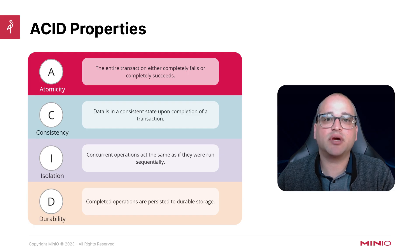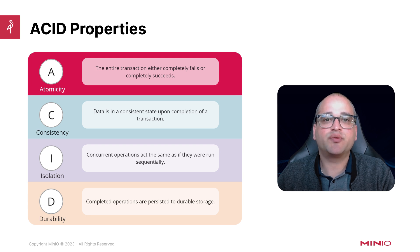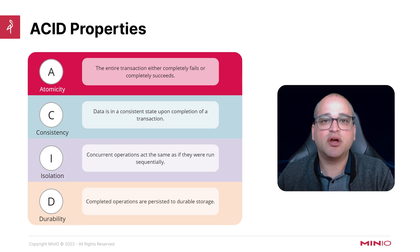So where does the term ACID come from? It's an acronym, of course, and it's nothing new to the world of data storage systems. It was actually coined by two computer science researchers way back in the 1980s. It's really only been the last few years, though, where we've started to see full ACID support become applicable and available in data lake architectures. This development is largely a result of the recent maturity and popularity of open table formats like Iceberg, Hudi, and Delta Lake. So it's definitely worth diving a bit deeper into this trend.